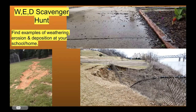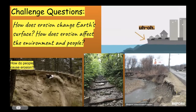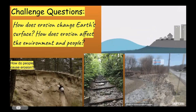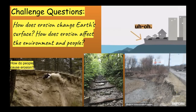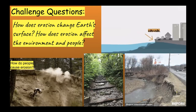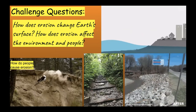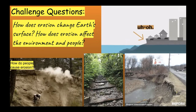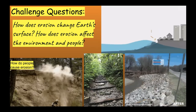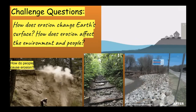Think about how erosion changes the earth's surface and how it affects the environment and people. At the Environmental Center, we have a hiking trail in the Post Oak Preserve with stair-like structures in the forest. Those stairs are important because they keep the soil in place. Without them, during heavy rainfall, water would carry all that dirt away, making a huge muddy mess. These stairs are a form of erosion control.